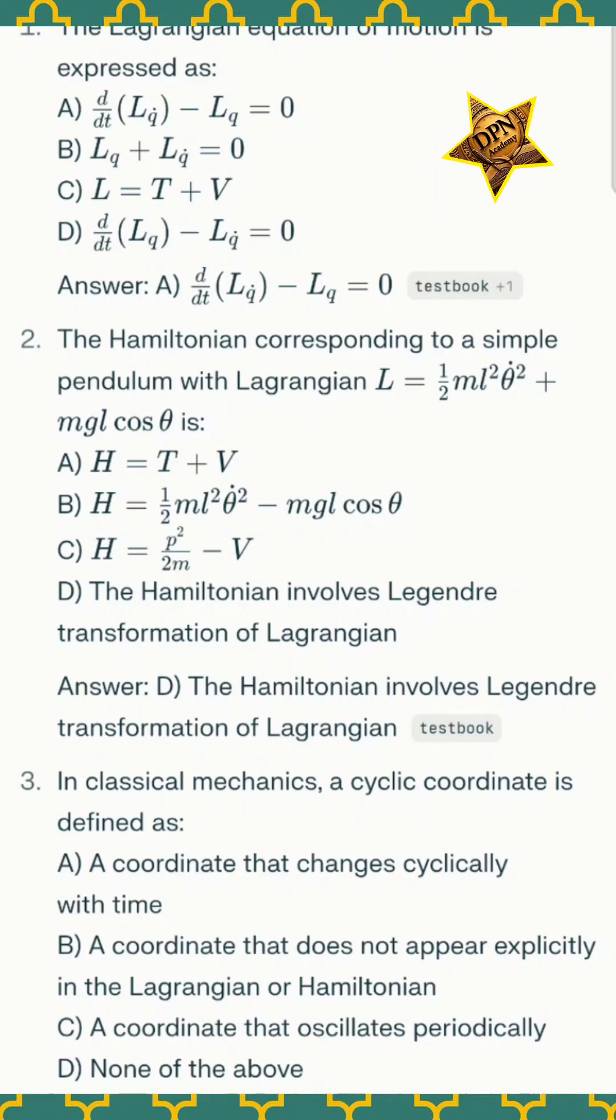In class we have three important topics: MCQ, classical mechanics, then Lagrangian equations, Hamiltonian equations, and cyclic coordinates. First question: the Lagrangian equation of motion is expressed as - the correct option is A.